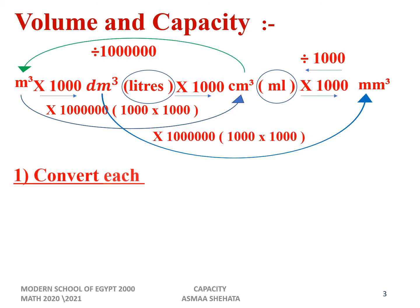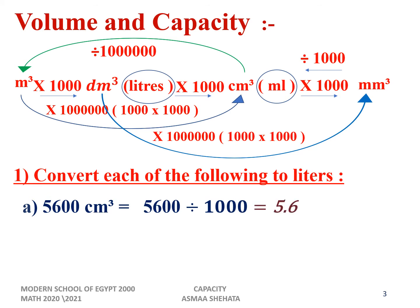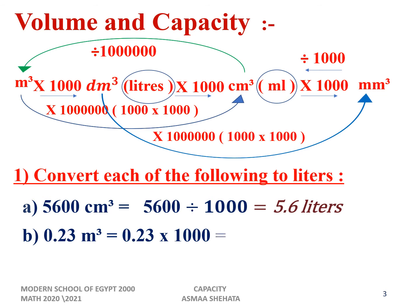Convert each of the following to liters. Number a: 5600 centimeter cube. I want to change it to liters. Going from centimeter cube to decimeter cube is small to big, so we divide by 1000. 5600 ÷ 1000 = 5.6 liters. Number b: 0.23 meter cube. I want to change it to liters. Going from big unit to small unit — we move one step — so times 1000. 0.23 × 1000 = 230 liters.